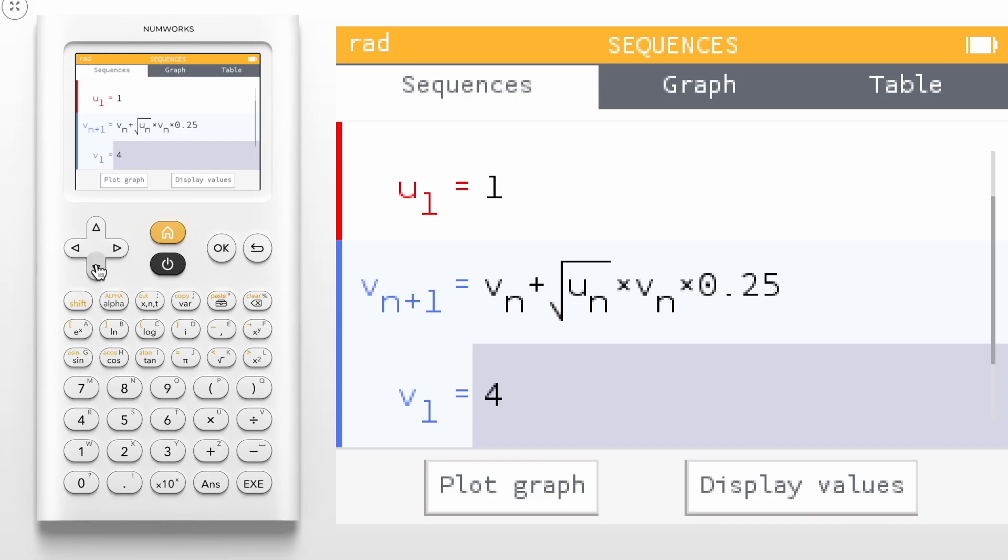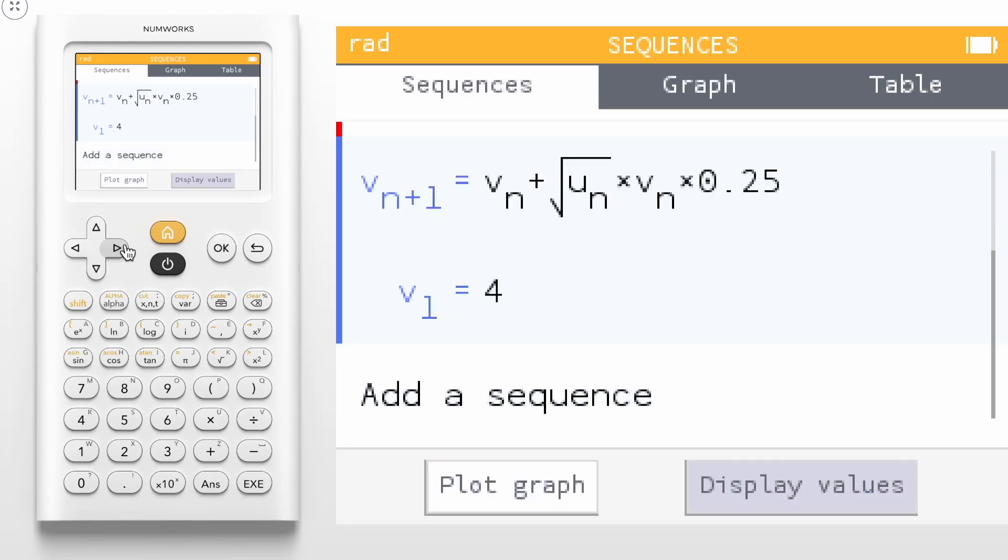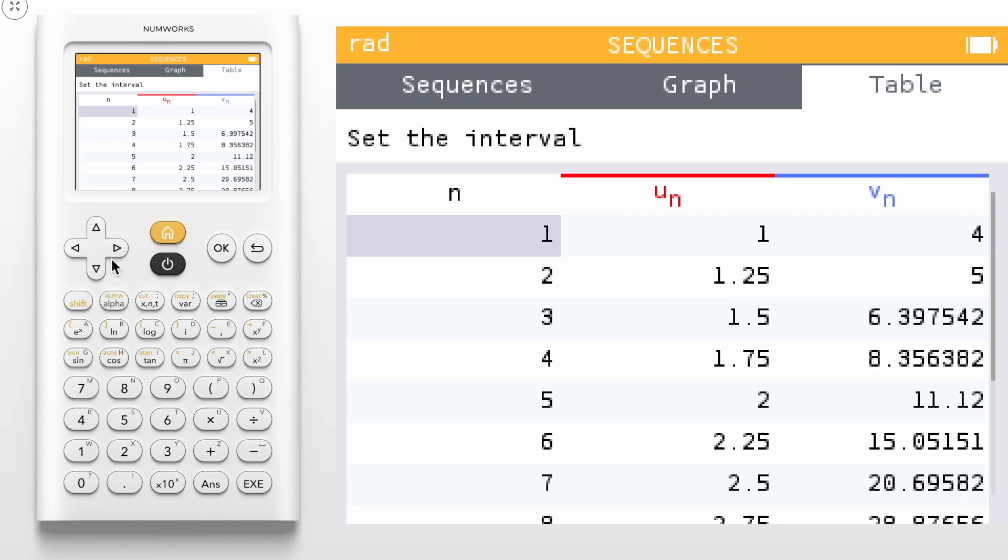Now that we have our sequences created for the x and the y values, we can navigate to our table of values to see the table that we need generated.